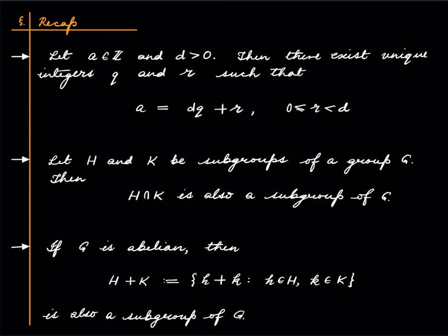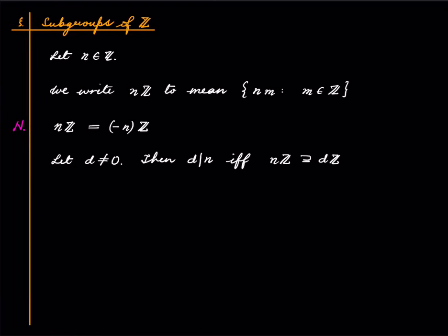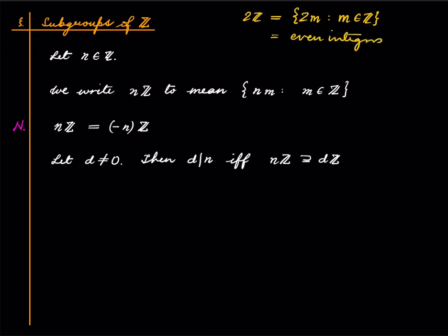So these are the prerequisites. Now let me recall a notation: for some integer n, we write nℤ to mean the set of all integers multiplied by n — collect all such things in a set. That is nℤ. For example, 2ℤ is all things of this sort, which is all even integers, i.e., integers divisible by 2.